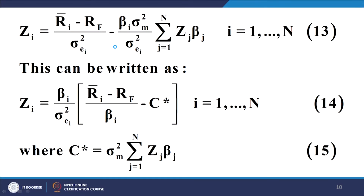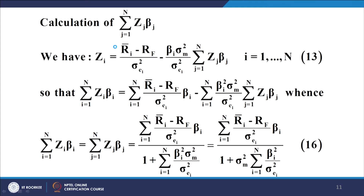The term we do not know in equation number 14 is the summation Σ Z_j β_j. We have to express this in terms of available inputs. What we do is multiply the equation for Z_i by β_i and then sum over all values of i. Doing so, we get: Σ Z_i β_i equals the expression on the right-hand side.